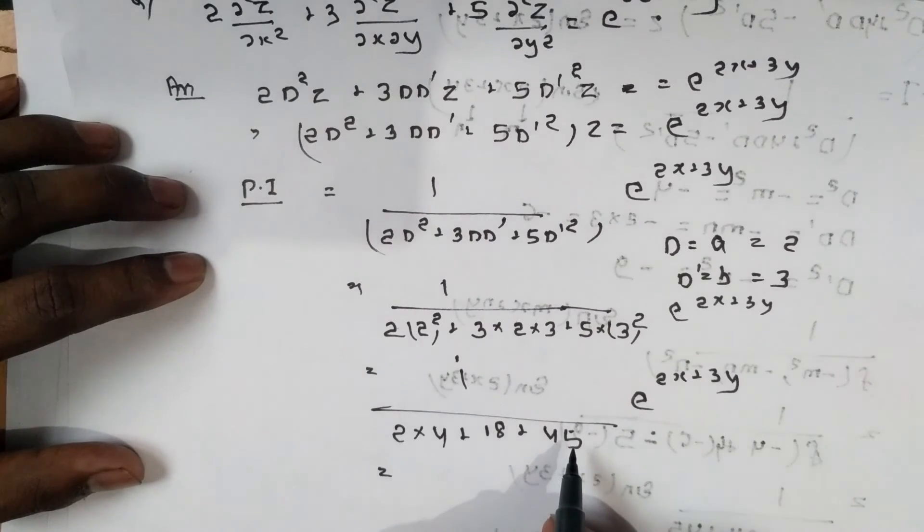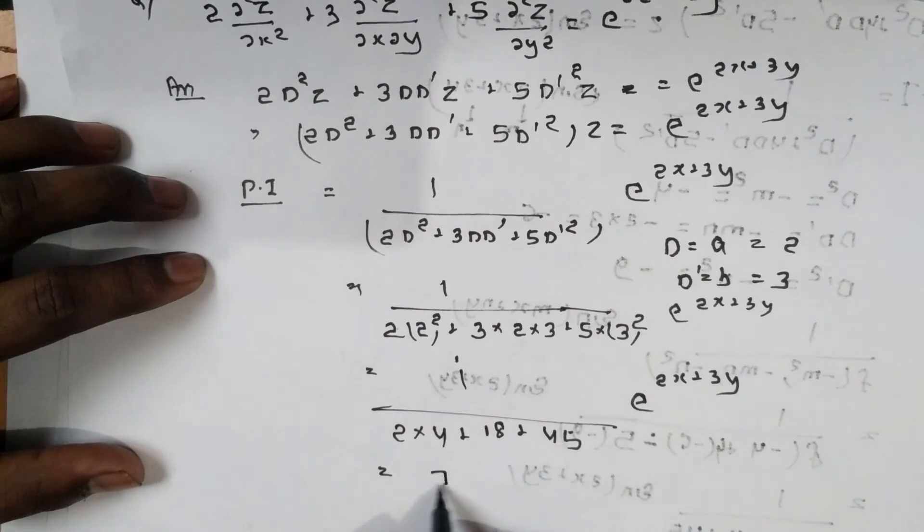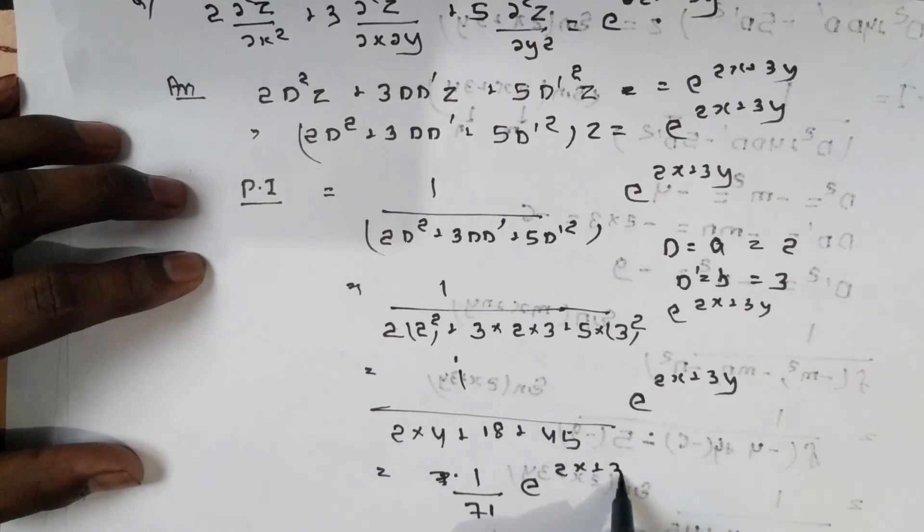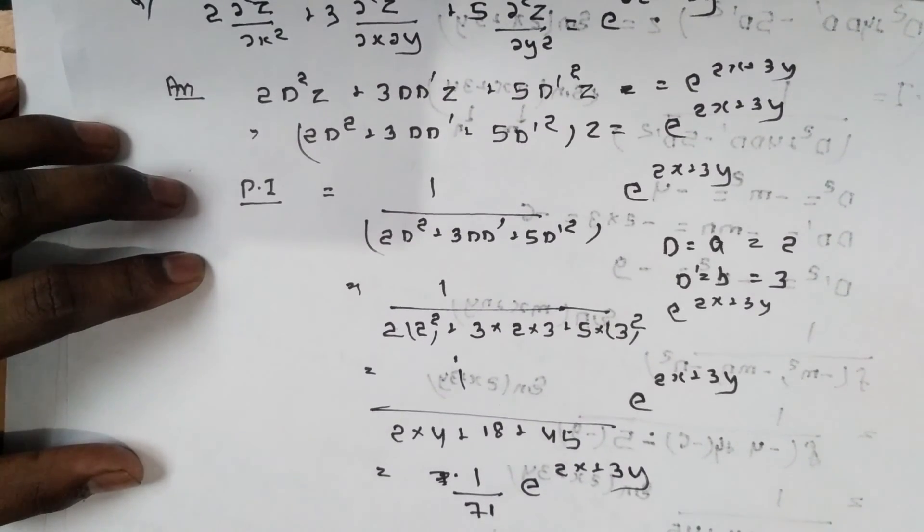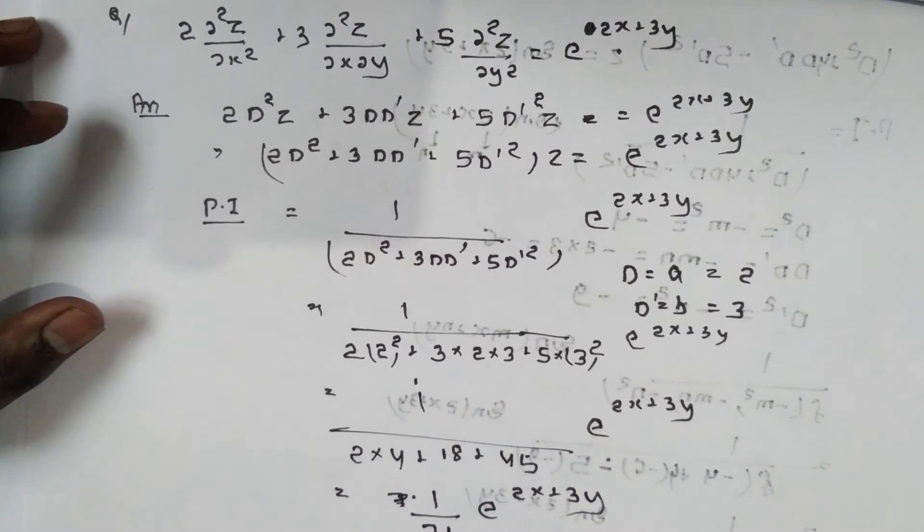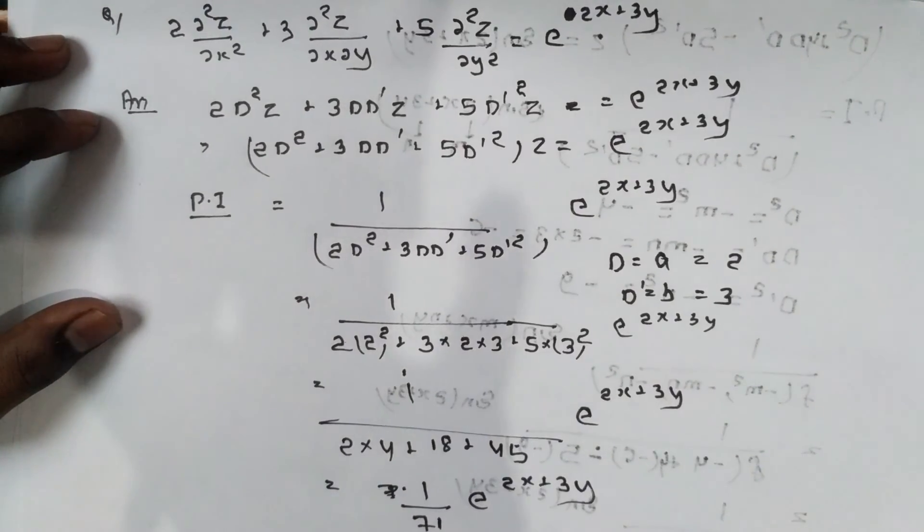Therefore, the particular integral is (1/71)e^(2x+3y). Thank you, please like and subscribe to my YouTube channel, Maths IPUC Limus News.